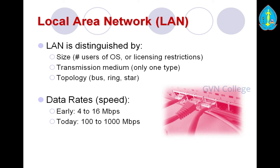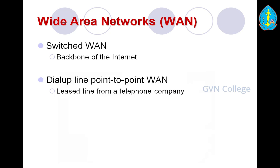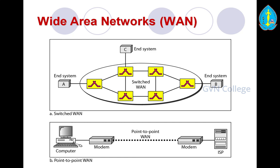A wide area network (WAN) provides long-distance transmission of data over large geographical areas — a country, continent, or the worldwide web. Switched WAN is the backbone of the internet. The next type is dial-up line or point-to-point WAN, using a leased line from a telephone company. In a switched WAN example, end systems A and B are connected through switches. In a point-to-point WAN, a modem is used — the modem converts signals through modulation and demodulation: analog to digital and digital to analog.